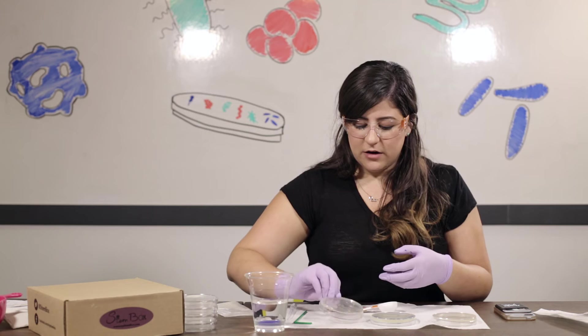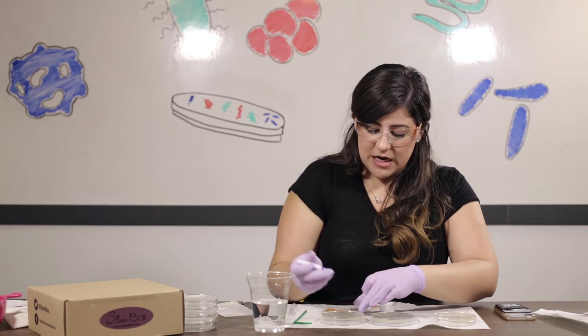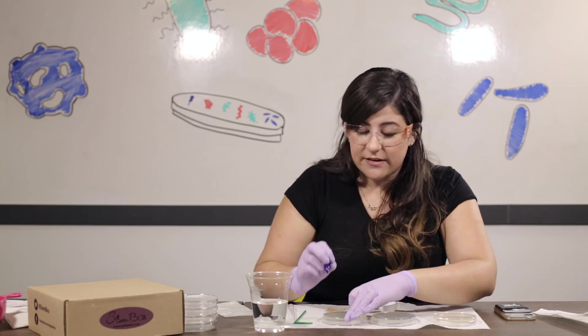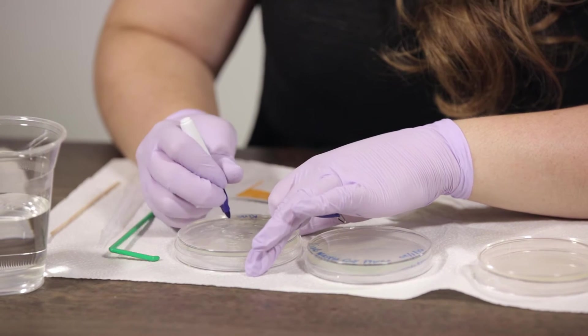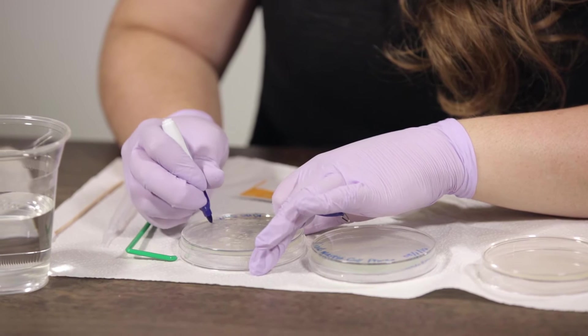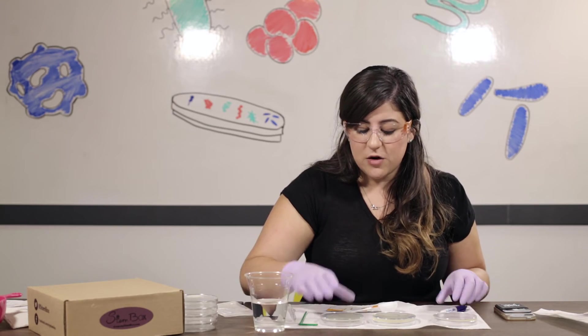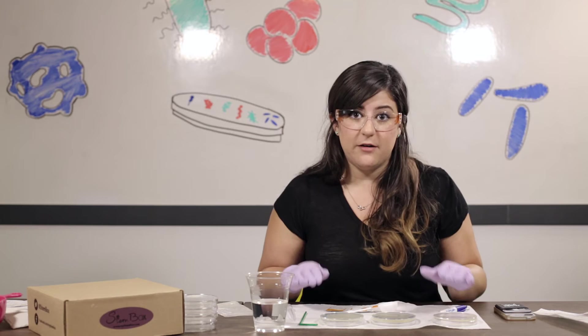And again, you're just gonna write your name and the sample name on it and the date so that you know for how long it's been sitting. So we're just gonna call this one Kina spit. The date. And we'll store this upside down as well so that there is no condensation formed on the surface of our cultures.